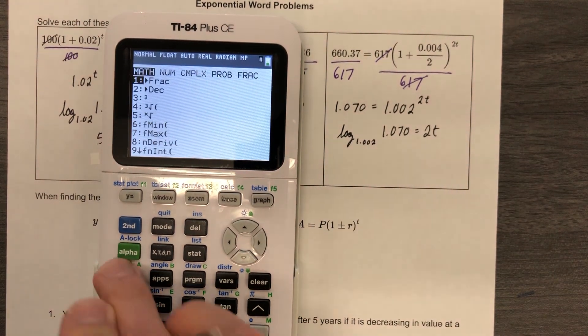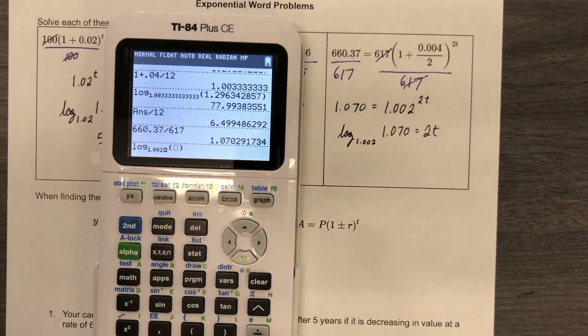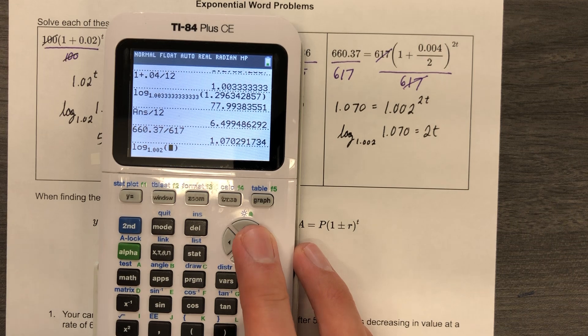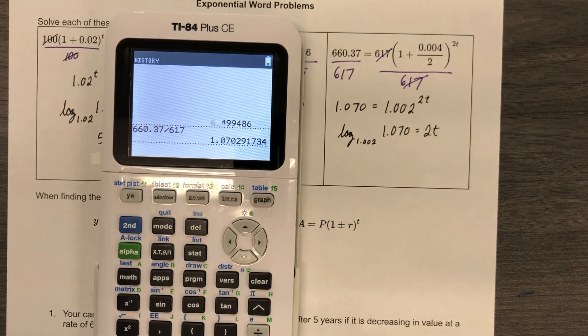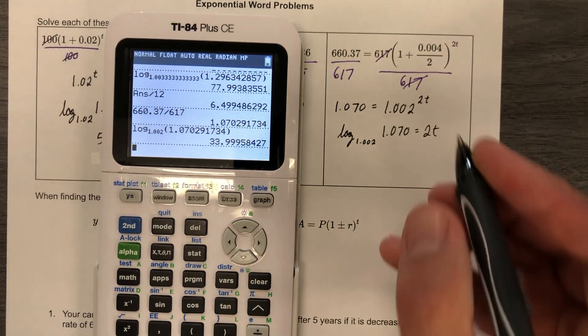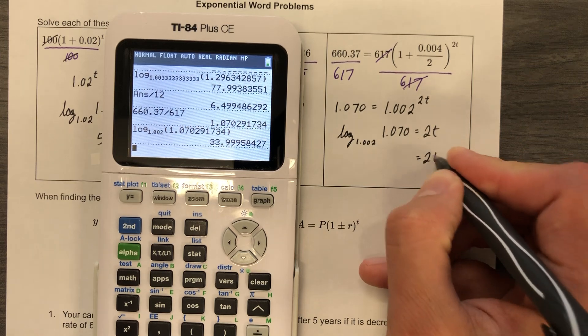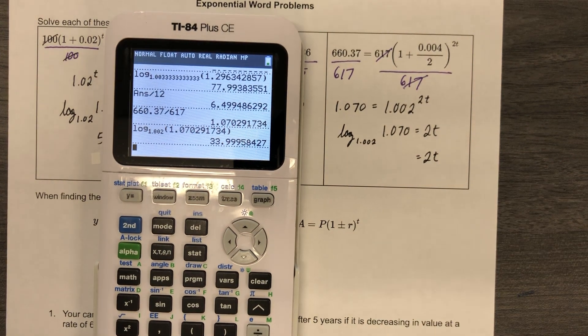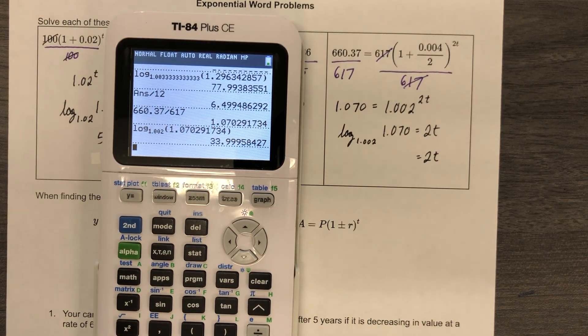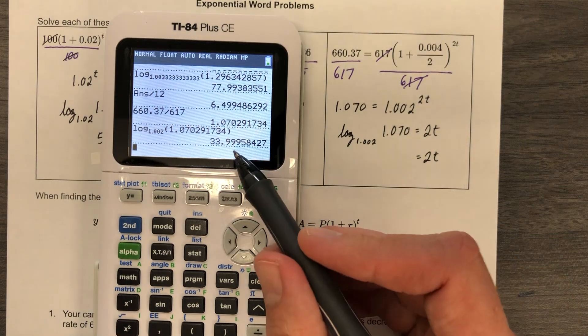And so let's type it. Log base 1.002 of, okay, whole thing. Boom. And I got 2t equals, okay, I'm going to round a little bit early on this one, and also don't round until the end. Let's just be real honest with ourselves. That's 34, right? That's just going to round to 34.